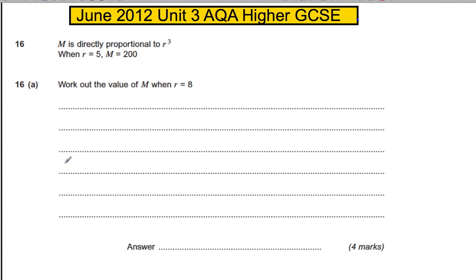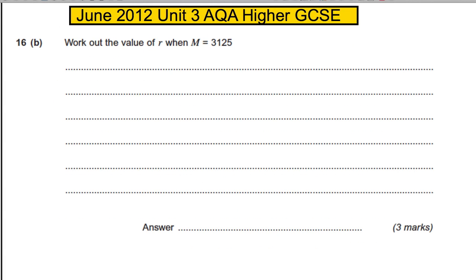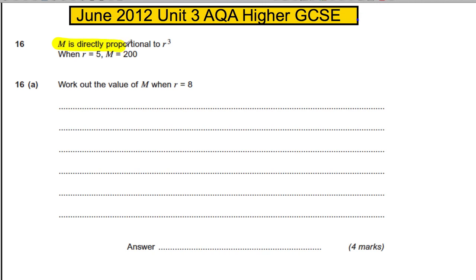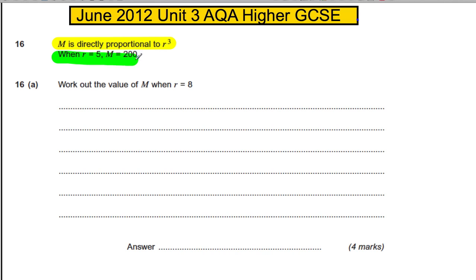Question 16 on this paper is a 4-mark part A and a 3-mark part B — 7 marks for a proportion question, which I actually think are so easy it's untrue, and they're regarded as A star. So let's make sure we always get these right and read the questions carefully. We are told that M is directly proportional to R cubed, and we are told that when R is 5, M is 200. Work out the value of M when R is 8 — that's all we're told.